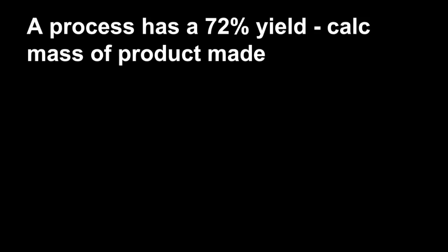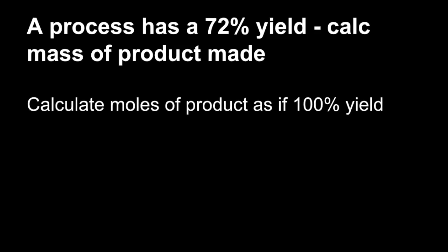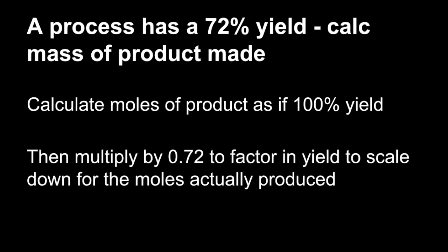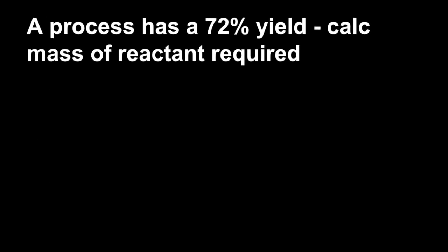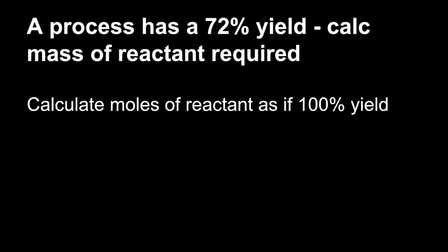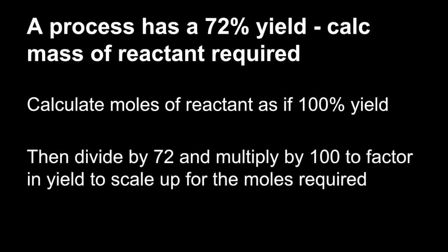If you're given a percentage yield and you've got to calculate the mass of product made, you're obviously going to get less than you should. The first thing you should do is calculate the moles of product as if it was 100%, then factor in the yield. 0.72 in this case to scale down for the moles you're actually going to get. Then convert the mass, moles times MR. Going the other way seems to cause more problems. Suppose a process has a 72% yield, we've got to calculate the mass of reactant required. Again, calculate the moles of your reactant as if it was 100% yield. Then to factor in the yield, you divide by 72 and multiply by 100. That will scale it up to give you the moles that you're going to need. And then, mass equals moles times MR.